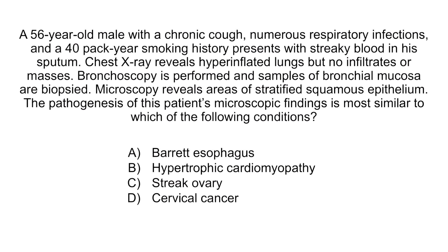Let's review with a question. A 56-year-old male with a chronic cough, numerous respiratory infections, and a 40-pack-year smoking history presents with streaky blood in his sputum. Chest x-ray reveals hyperinflated lungs but no infiltrates or masses. Bronchoscopy is performed and samples of bronchial mucosa are biopsied. Microscopy reveals areas of stratified squamous epithelium. The pathogenesis of this patient's microscopic findings is most similar to which of the following? A. Barrett esophagus. B. Hypertrophic cardiomyopathy. C. Streak ovary. Or D. Cervical cancer. We have a 56-year-old male with a chronic history of smoking, and microscopy reveals stratified squamous epithelium instead of the normal ciliated columnar epithelium expected in the bronchial mucosa. So this is an example of metaplasia, making A the correct answer, because Barrett esophagus is the only example here of metaplasia.